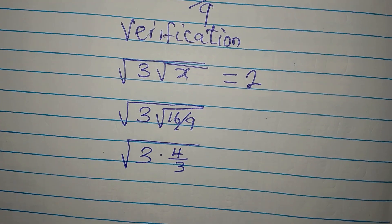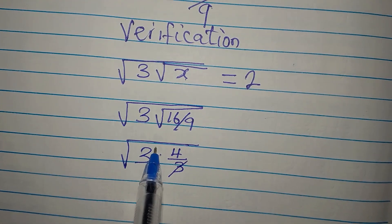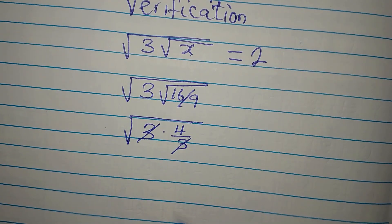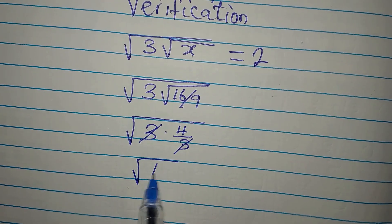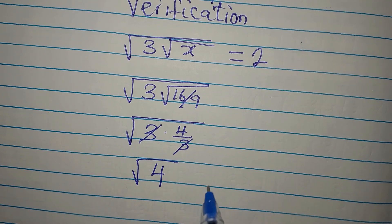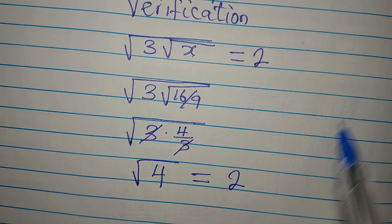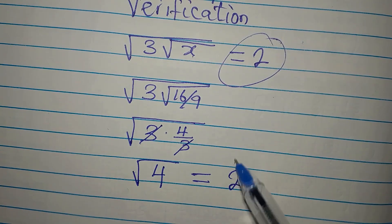And again, these 3 can just go there. So what we'll be having now is 1 times 4 and that is 4. So we have square root of 4 on the left. And square root of 4 is just equal to 2. That is the same 2 we had over there.